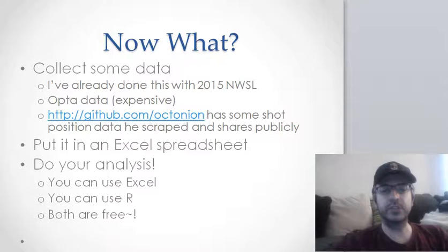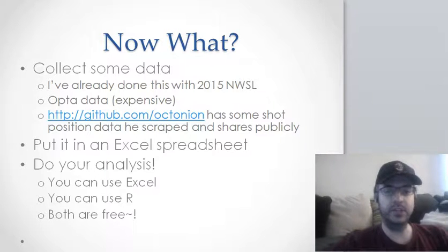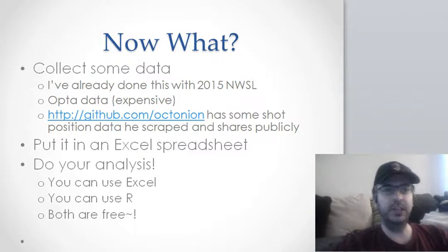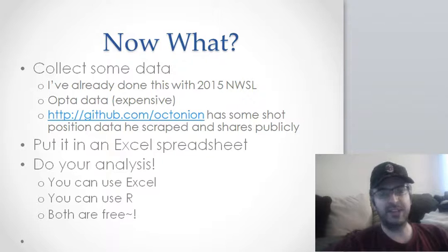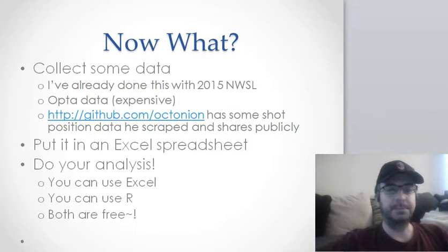Whatever you do, collect the data — collect all those variables you talked about. You need data on all those things, or whatever you want to put into your model. Put it into an Excel spreadsheet and do your analysis. You can use Excel for regression coefficients, or there are fancier add-ins, but once you start using add-ins you should probably just use R. R is free statistical software — it's powerful and fairly easy to use. Excel and R are free. PSPP is a freeware version of SPSS. There's also Stata, MATLAB, SAS — pick the software of your choice. I like Excel and R because they're free, and free is always good.